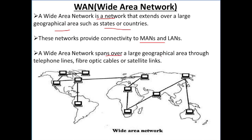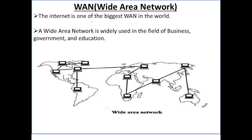Wide Area Network spans large geographical areas through telephone lines, fiber optic cables, and satellite links. The internet is one of the biggest WANs in the world and is the main example of a wide area network. WAN is widely used in the fields of business, government, and education.